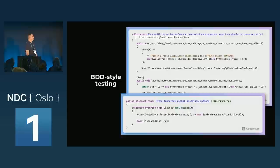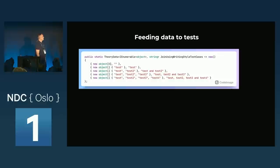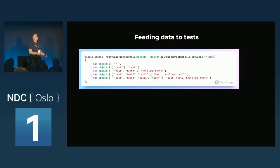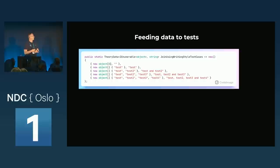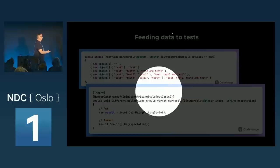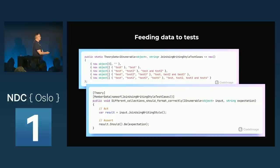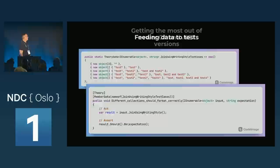Feeding data to tests — for XUnit, there's 'theory' which calls the same test method with different sets of parameters. In the past these were all untyped, all of type object. Now you have 'TheoryData' with a generic type parameter, which makes it more type-safe. It's not going to change the world but it's one of those little gems that make test code a little bit easier.